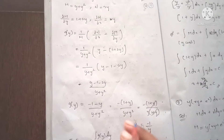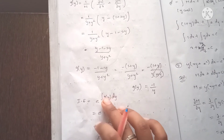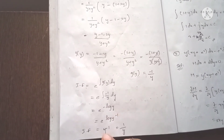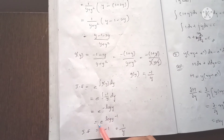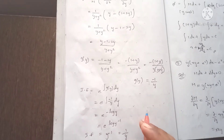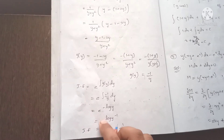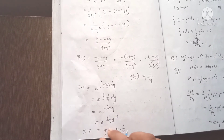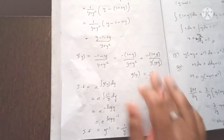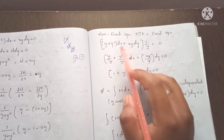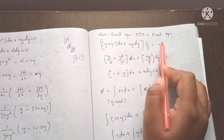Since the result is only in y terms, we use the fifth method. The integration factor is e to the power of the integration of g of y dy, which is e to the power of integration of minus 1 by y dy, giving e to the power of minus log y, which equals y to the power minus 1, that is 1 by y. We multiply the equation by the integration factor 1 by y.